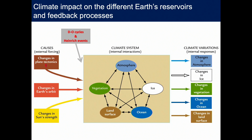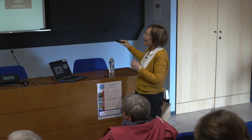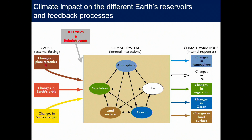Therefore, during the last million years we have two important forcings for the climate system: one is changes in Earth's orbit, and the other is the millennial-scale climatic variability. Both climatic changes affect vegetation, the atmosphere, ice, the ocean, and the land surface. They affect each of the reservoirs, but each reservoir also affects the others through internal interactions and internal feedbacks. This means the initial forcing can be amplified or reduced to produce the actual changes in atmosphere, ice, vegetation, ocean, and land surface that we see in the paleoclimatic record.